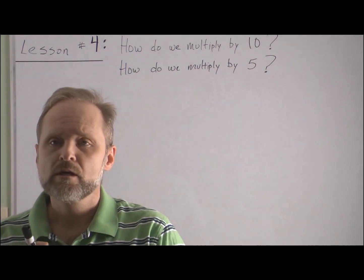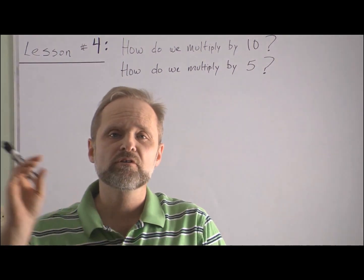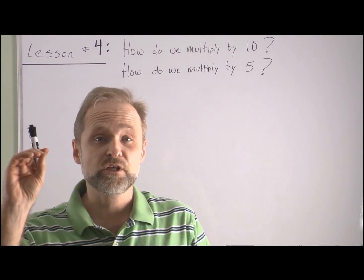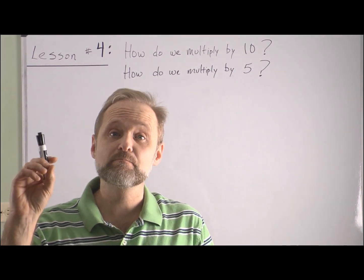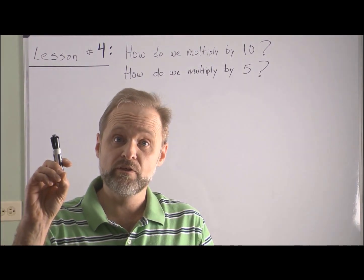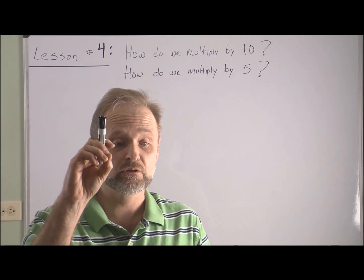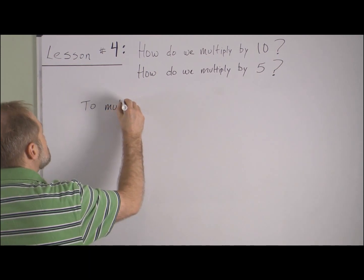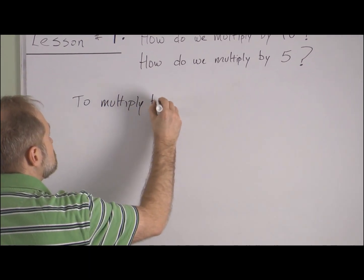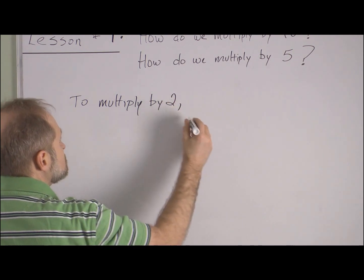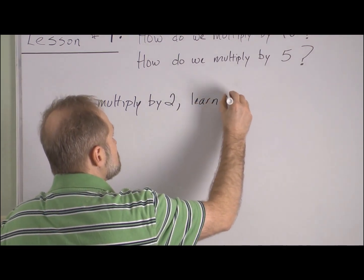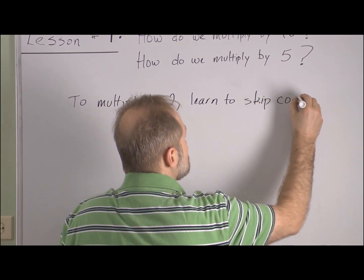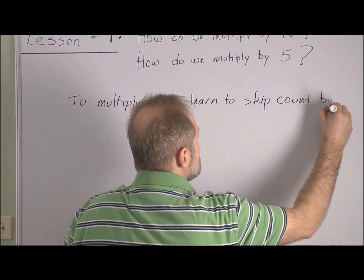Today's lesson — counting by tens and counting by fives — is going to help us figure out the values of groups of nickels and also groups of dimes. Just like with the twos, to multiply by two you learn to skip count by two. So to multiply by ten, learn to skip count by ten.